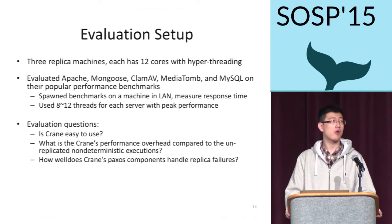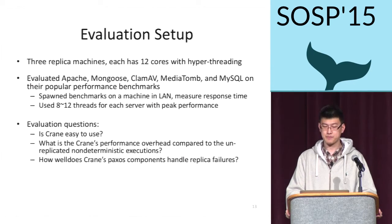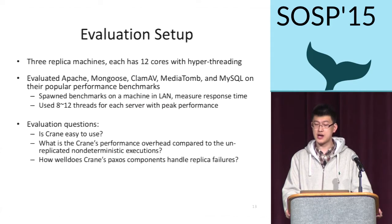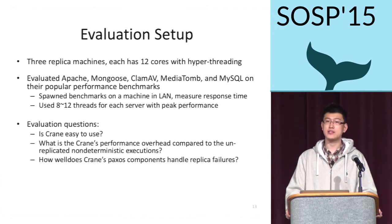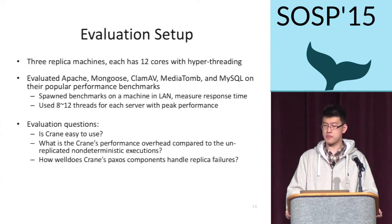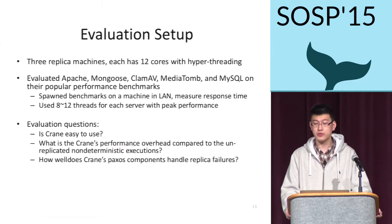Now I'd like to present our evaluation on Crane. We use three machines as replicas, each with 12 cores with hyper-threading. We evaluated five servers running on Crane with popular performance benchmarks. The benchmark program runs on another dedicated machine in a local area network and we measure response times. For each server, we use 8 to 12 threads to enable peak performance. We want to answer: is Crane easy to use? What's Crane's performance overhead compared to unreplicated non-deterministic native executions? And how well does Crane's Paxos component handle replica failures?